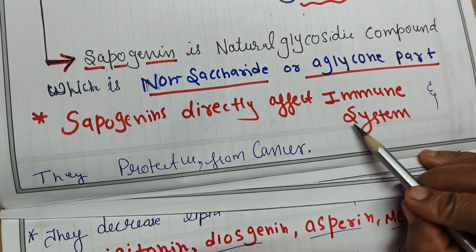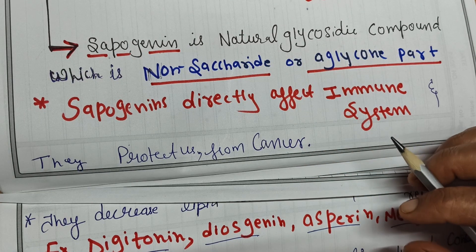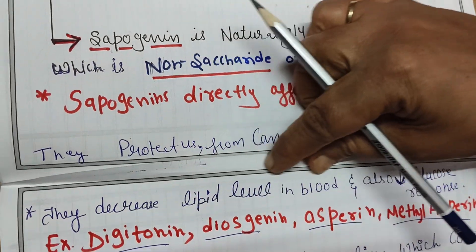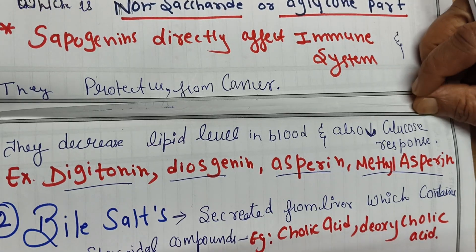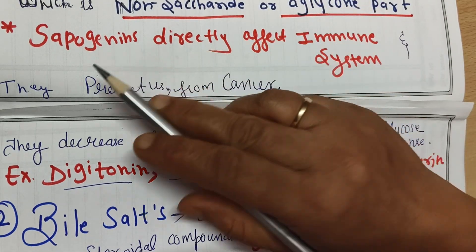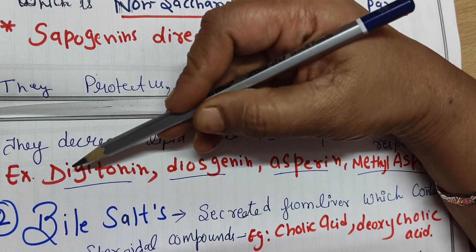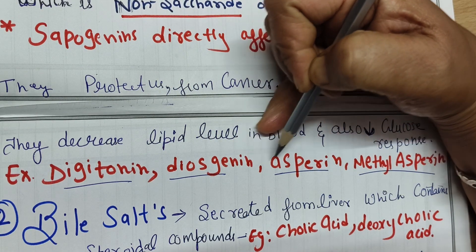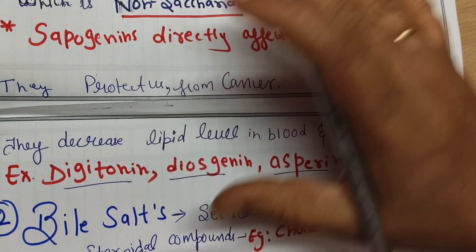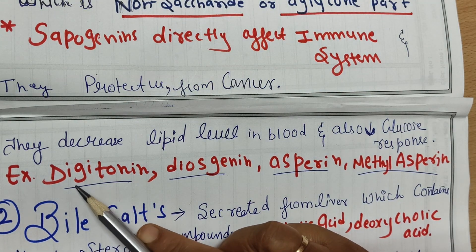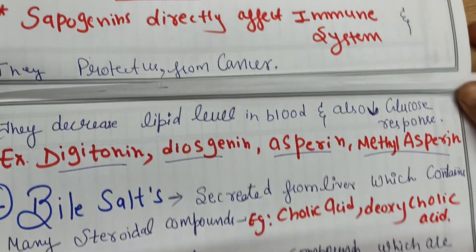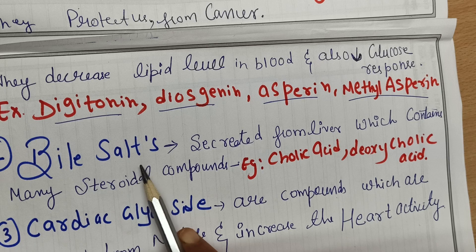Sapogenins decrease blood sugar levels and glucose response, thereby helping to prevent diabetes. The main examples of sapogenins are digitonin, diosgenin, aspirin, and methyl aspirin. These are the key examples to remember for the classification of steroids.